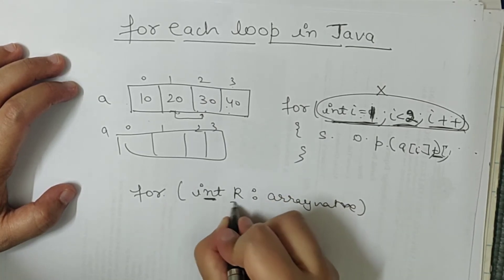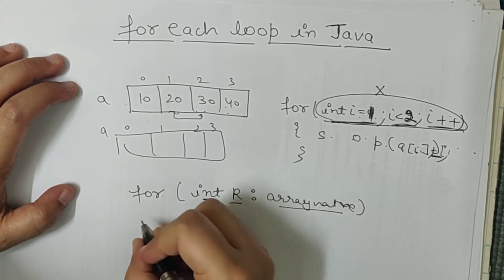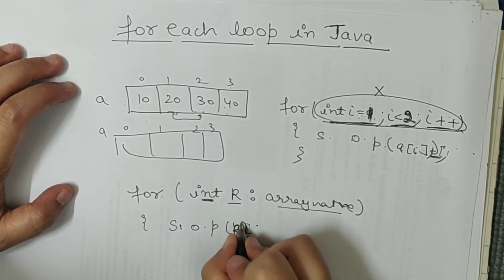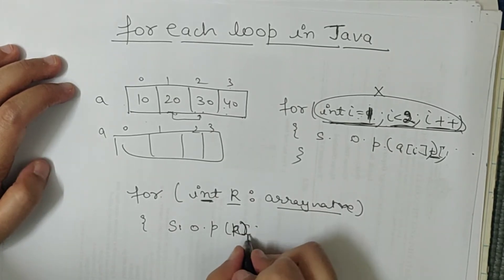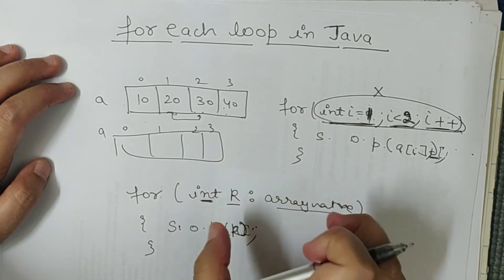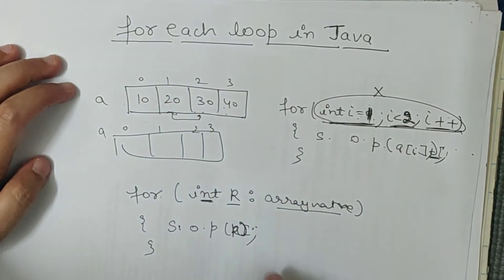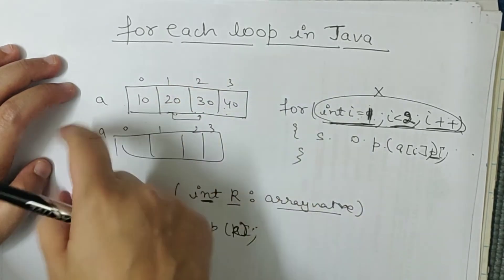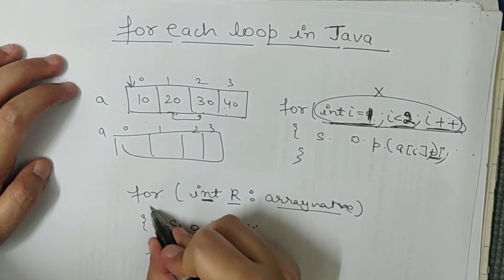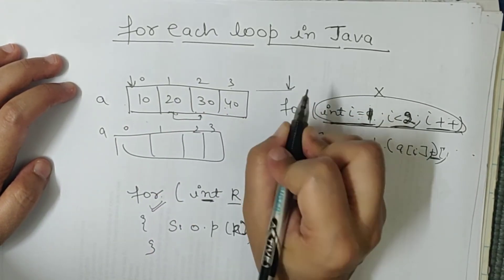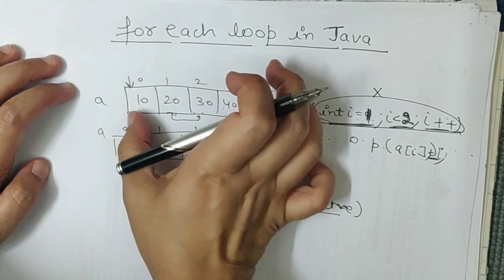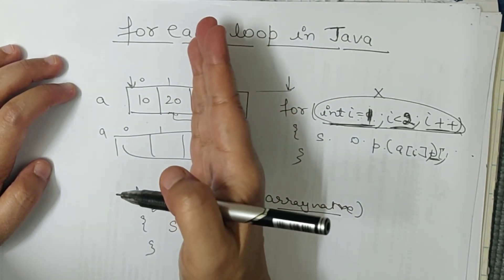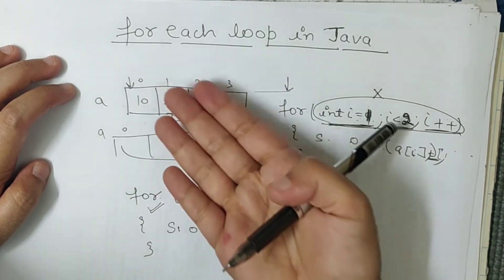Toh yeh kya hai — data type, yeh koi bhi ek variable jiska naam aap kuch bhi rakh sakte ho, aur phir array ka naam. Aur aap yahan par print kar rahe ho system.out.println variable ki value. Basically for-each loop kya karta hai — print karta hai as-is array ko, that's it. Aur kuch bhi kaam nahi kar sakte for-each loop mein. Kitna bhi bada array hoga, woh as-is start hoga starting point se aur tab tak print hoga jab tak array ki collection khatam nahi ho jaati.